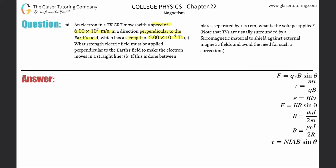Letter a: What strength electric field must be applied perpendicular to the Earth's field to make the electron move in a straight line? Basically, take a look at number 17. I went over this concept, so we're going to look at this formula.